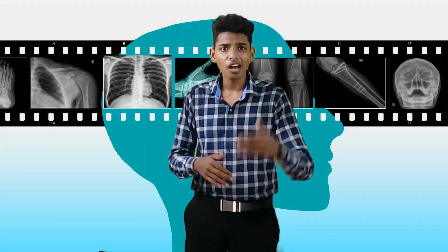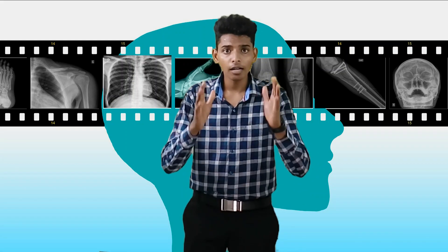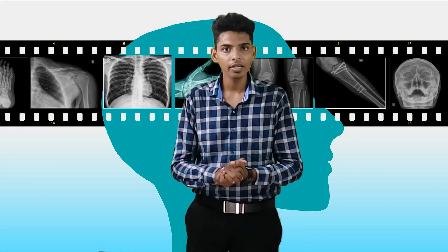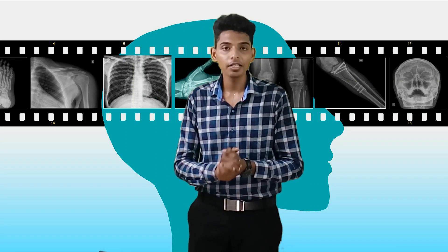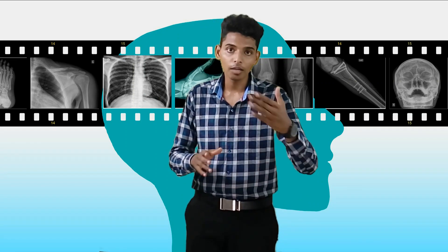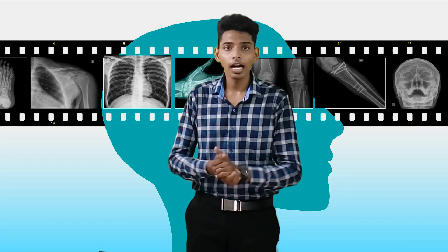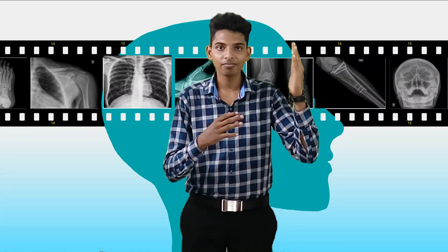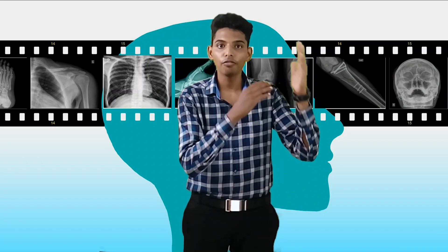X-rays can affect photographic film and form a latent image. A latent image is an invisible image stored inside the film before development. After development, we can read the image which is present inside the film.